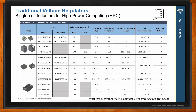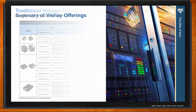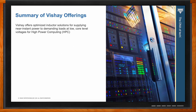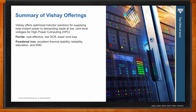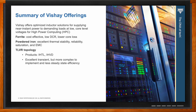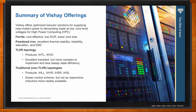To recap: we talked about AI processors and high-power computing applications, specifically regarding power inductor selection for the power stage. Vishay offers quite a few inductor solutions optimized for supplying near-instant power to demanding processors. When choosing between ferrite and powdered iron inductors, sometimes that choice is made for you — other times you may go with ferrite if price, low DCR, and lower core losses are crucial. Otherwise, powdered iron is an excellent choice when thermal stability, reliability, saturation, and EMC are critical.